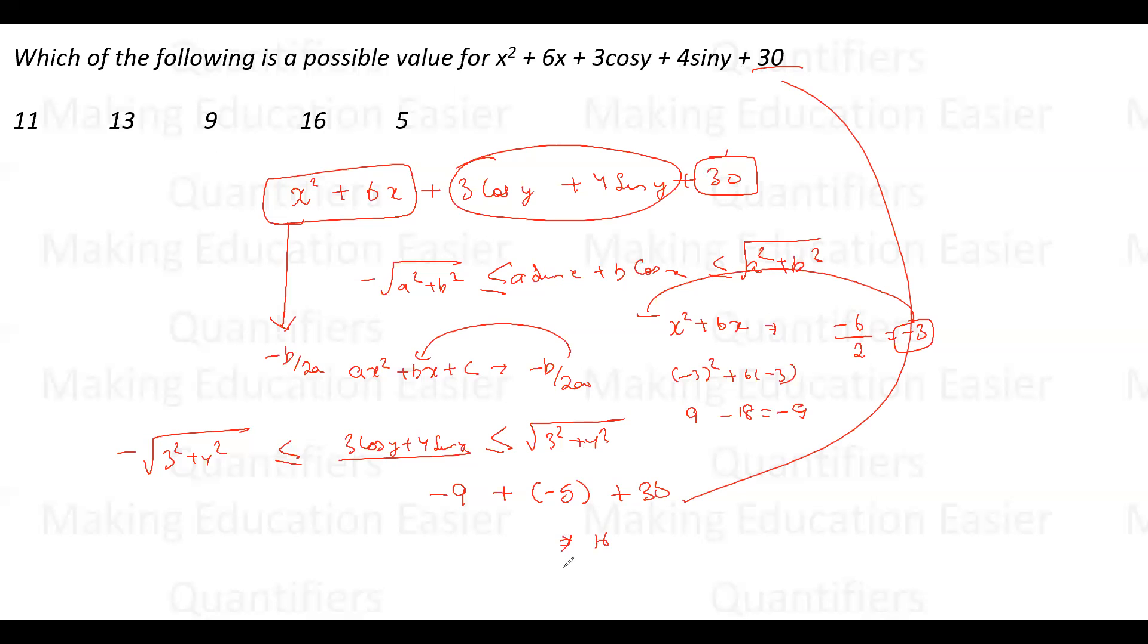16 is the minimum value this expression can attain, which means out of the possible options 11, 13, 9, and 5 are not even possible. Only one possible value is 16, which is our required answer. A very conceptual yet tricky question—a perfect CAT level question. I hope you understood the concept. Let's see the second question.